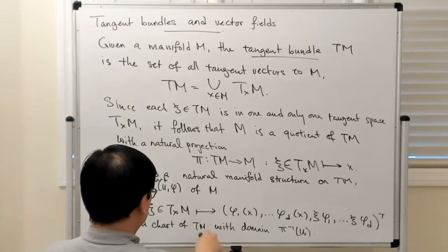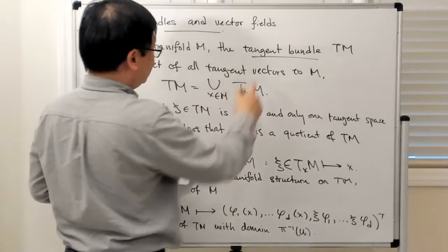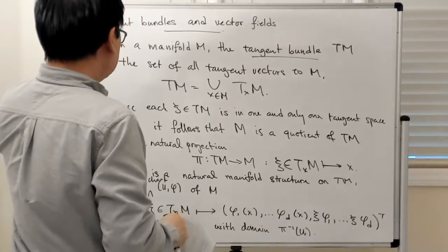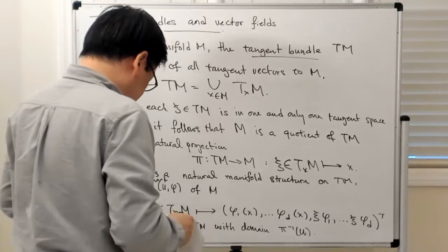So endowed with this atlas, which is induced by charts of this form, you endow this set with a manifold structure, and with that manifold structure we call it the tangent bundle. This is the notion of the tangent bundle and how the coordinate chart on the tangent bundle is induced by the coordinate chart on the base manifold M.